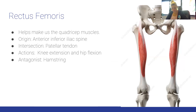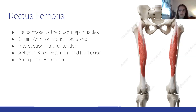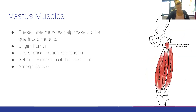The rectus femoris helps make up the quadriceps. Origin: anterior inferior iliac spine. Insertion: patellar tendon. Actions: knee extension and hip flexion. Antagonist: hamstrings.